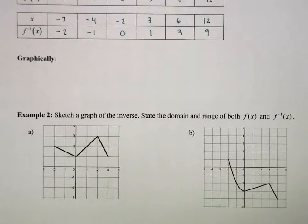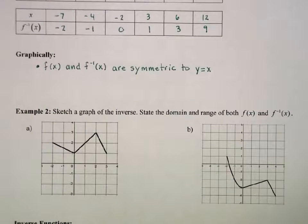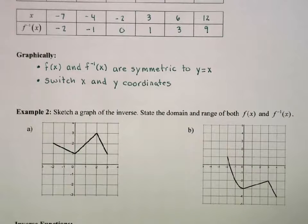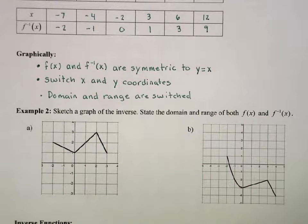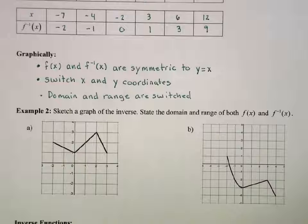Next we're going to look at the graph of inverse functions. The first fact for functions and their inverses is that the function and its inverse are symmetric to the line y equals x. We can switch the x and y coordinates of the function to arrive at the inverse. The consequence of that is that the domain and ranges are switched.